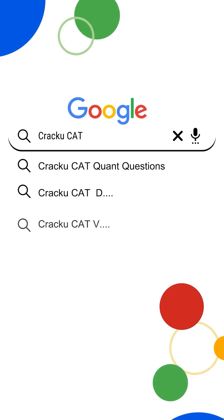If you want a structured daily practice plan, just go to Google and search Cracku CAT daily targets.